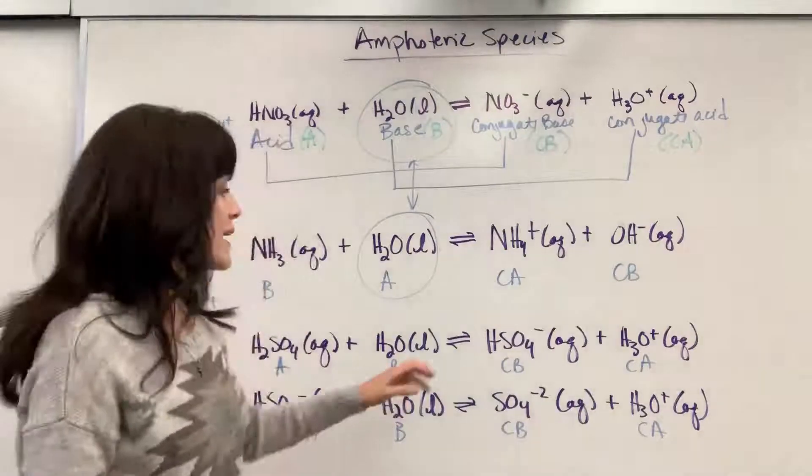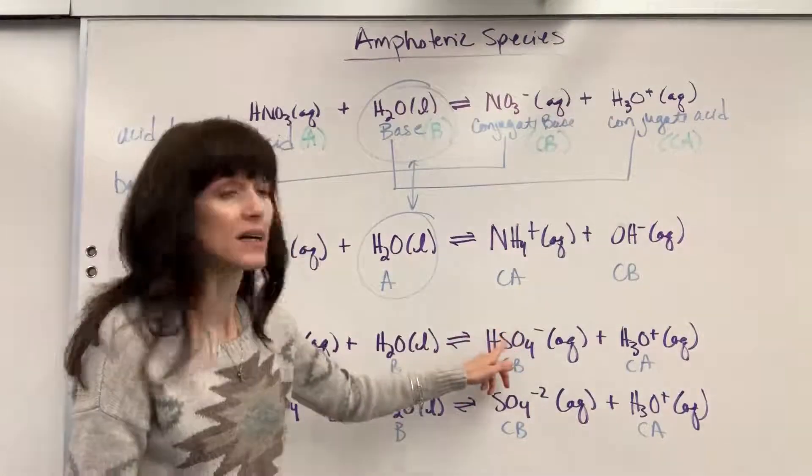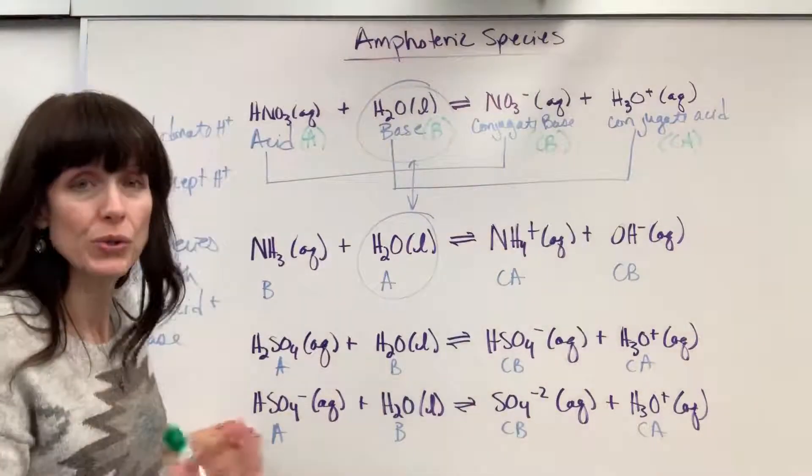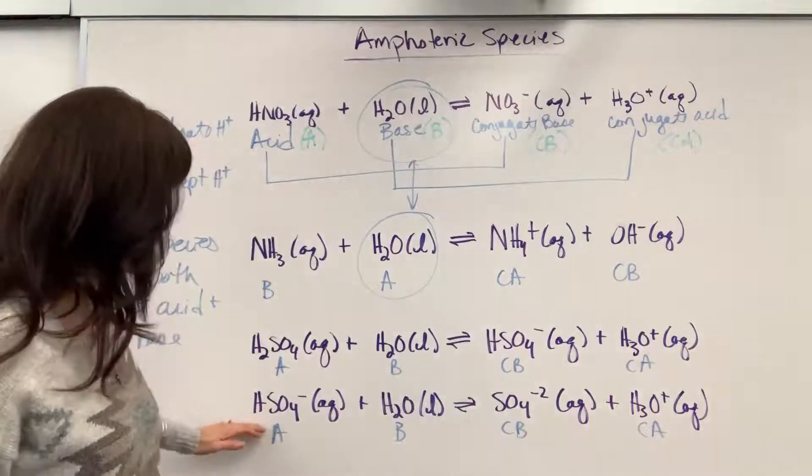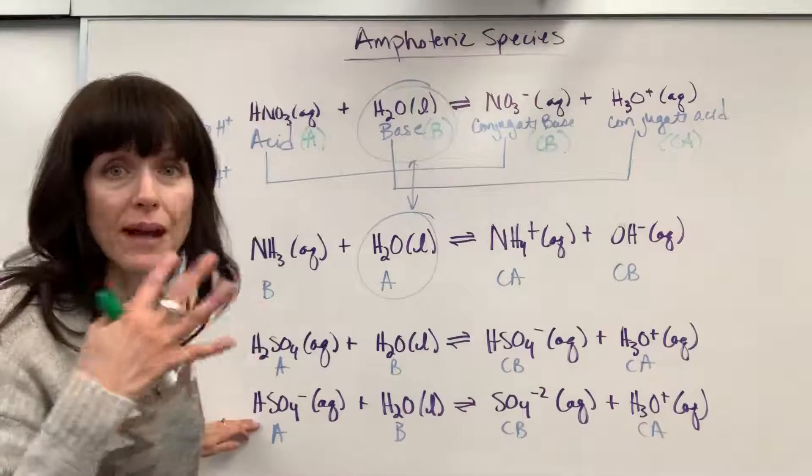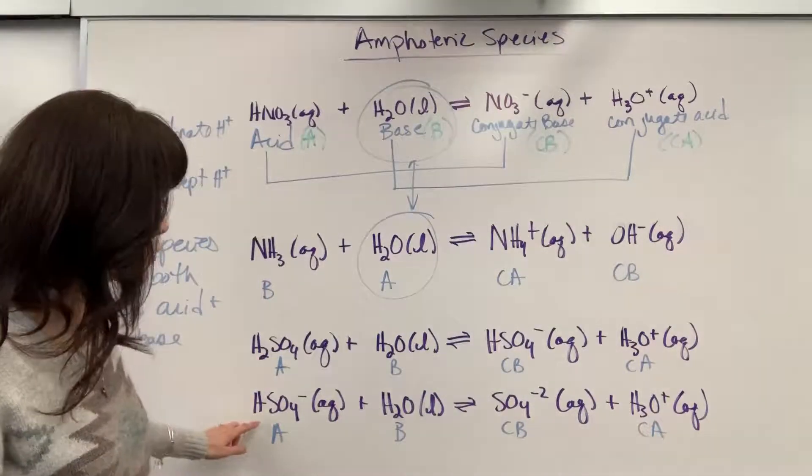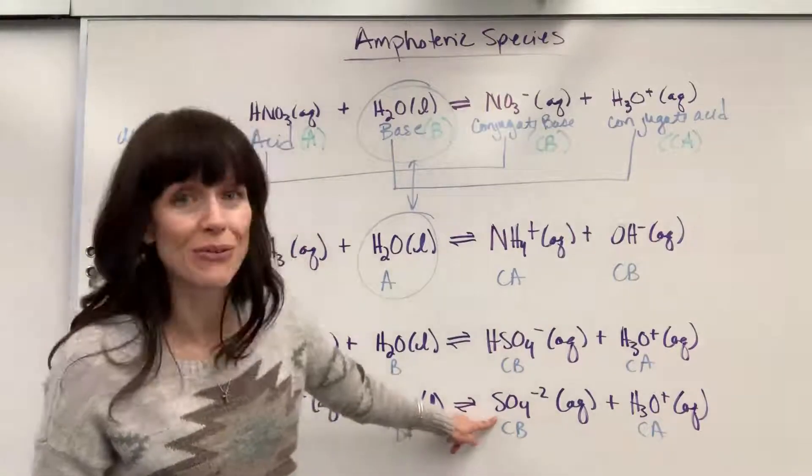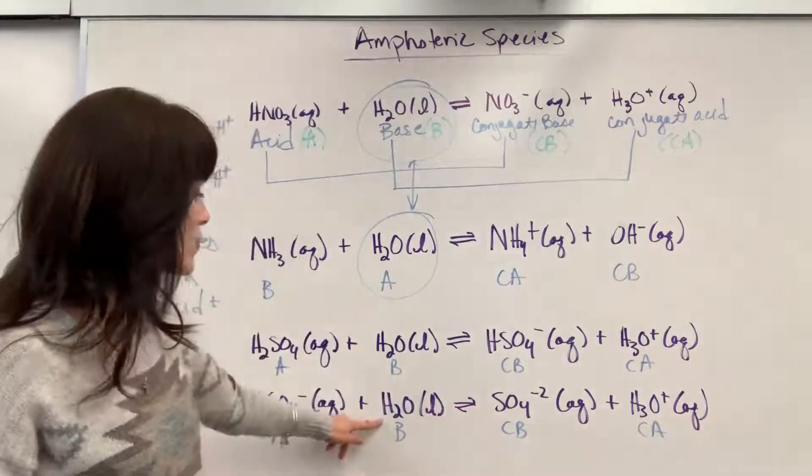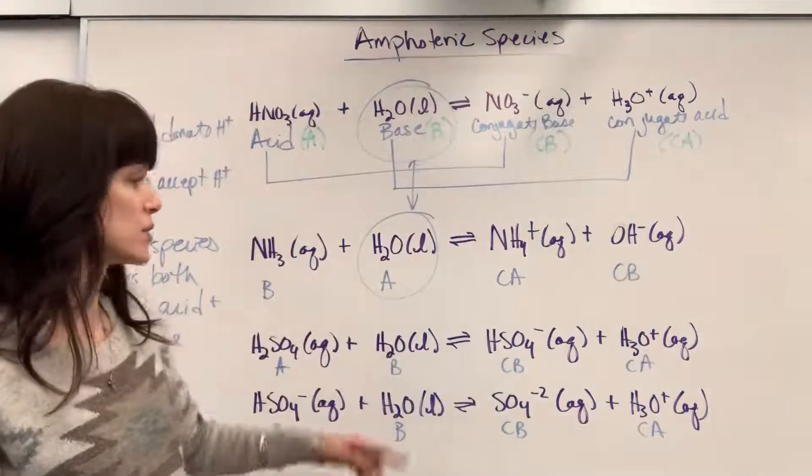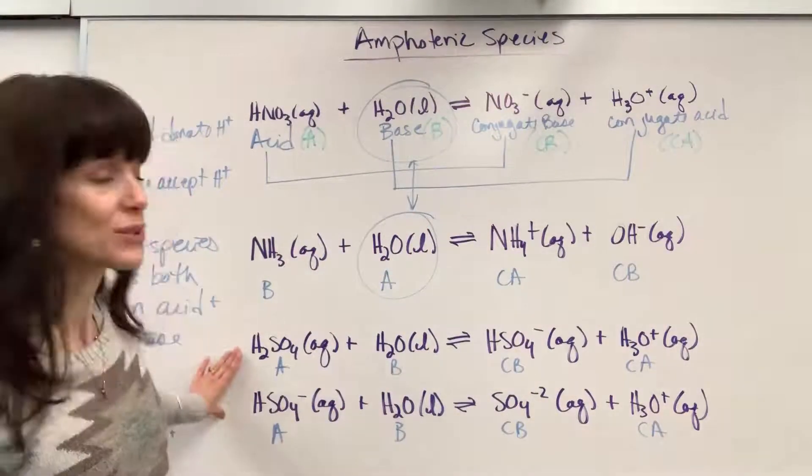So we lost one hydrogen. Now this species right here is going to lose a second hydrogen. So this does its own separate new chemical reaction. So this species, the hydrogen sulfate, is going to react with the water that's in that solution. And it's going to donate a hydrogen. It becomes sulfate ion. And the water, of course, is the base. It accepts the hydrogen to become hydronium.